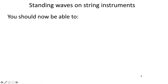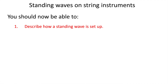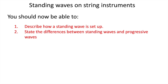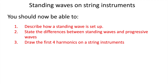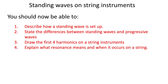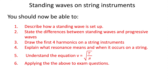To review, you should now be able to describe how a standing wave is set up, state the differences between standing waves and progressive waves, draw the first four harmonics on a string instrument and explain how they relate to multiples of the fundamental frequency, explain what resonance means and when it occurs on a string instrument, understand the equation v = √(T/μ), and apply it to exam questions. In the next video, we'll look at how standing waves are set up on wind instruments, which involve longitudinal waves.